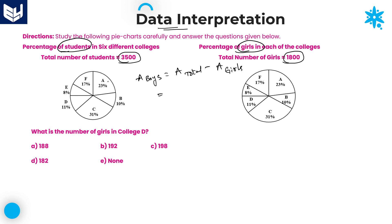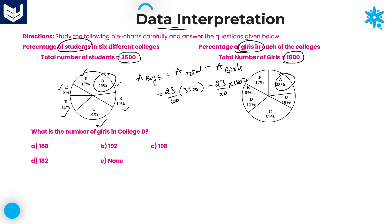How can we calculate the total number of boys? It is very simple. If you want the total number of boys from any college, take college A: college A boys = college A total minus college A girls. College A total is 23% out of 3,500. And if you observe carefully, the percentage values for each college A, B, C, D, E, F are the same in both diagrams. So directly you can subtract: 23% of 3,500 minus 23% of 1,800.